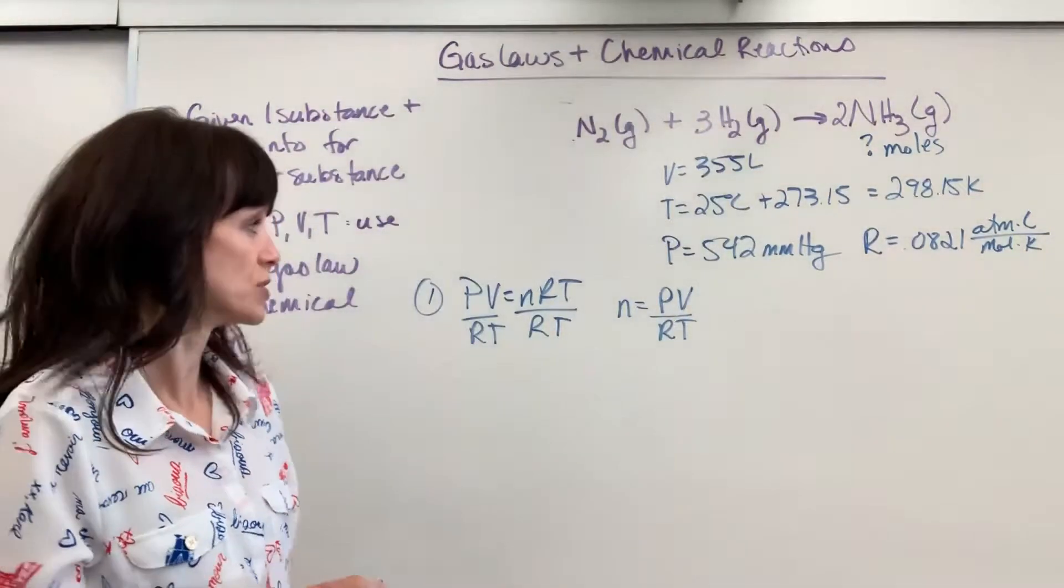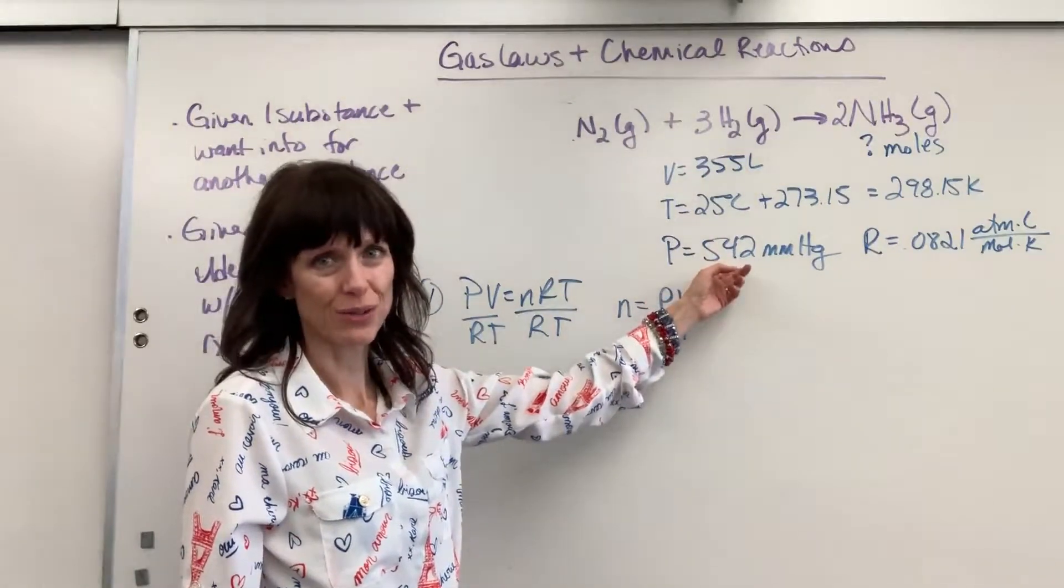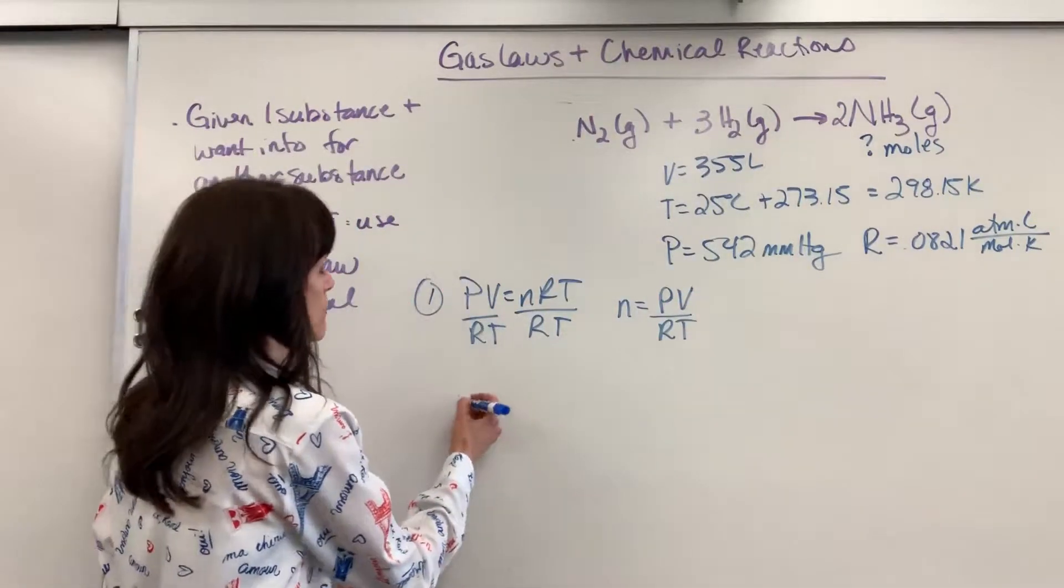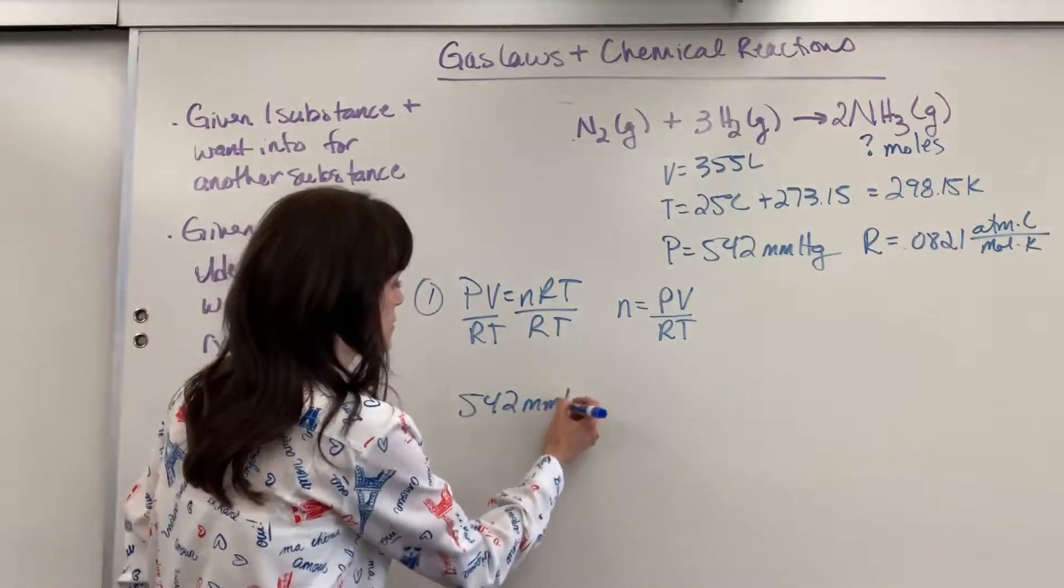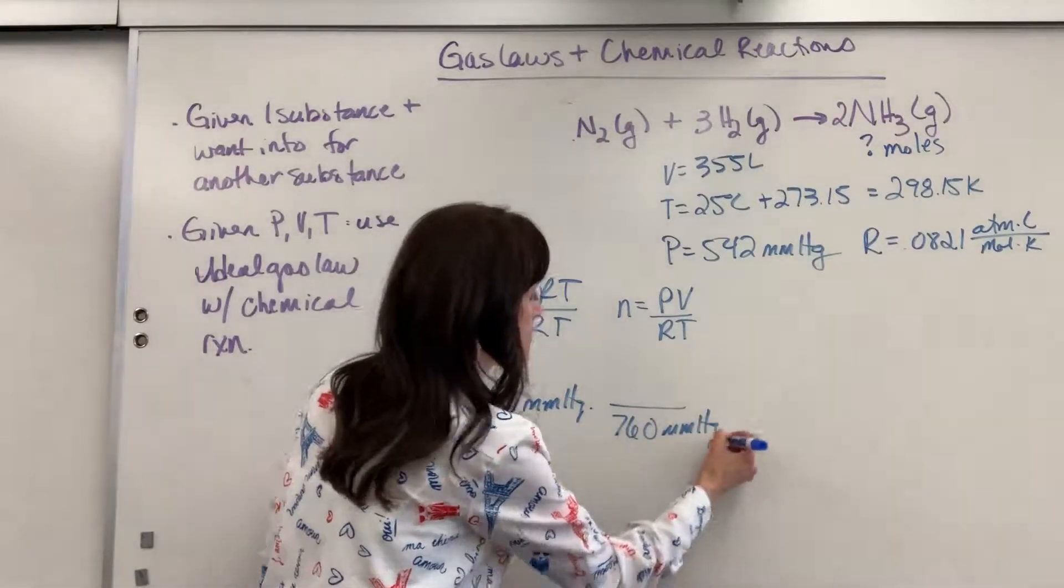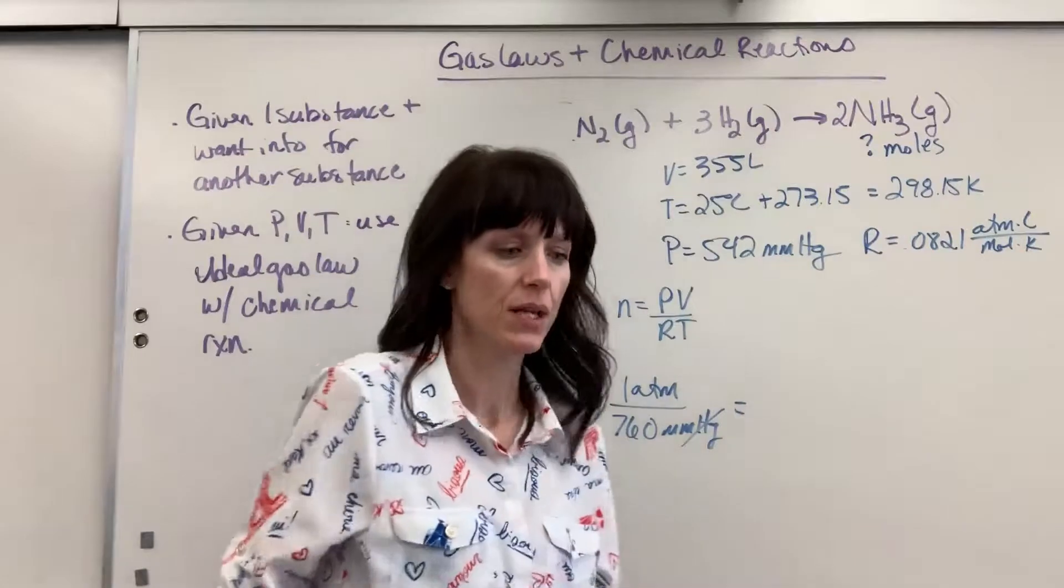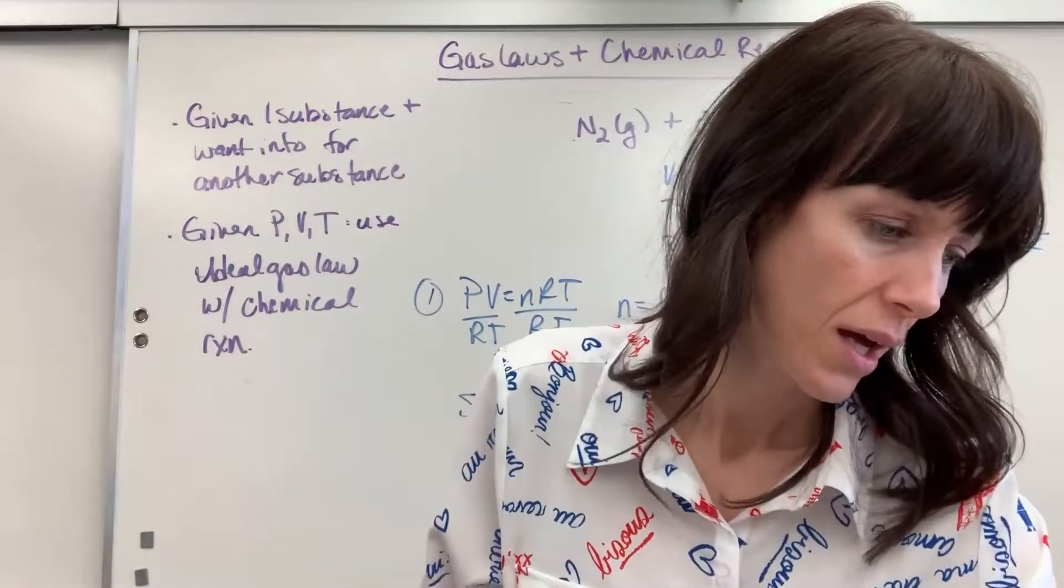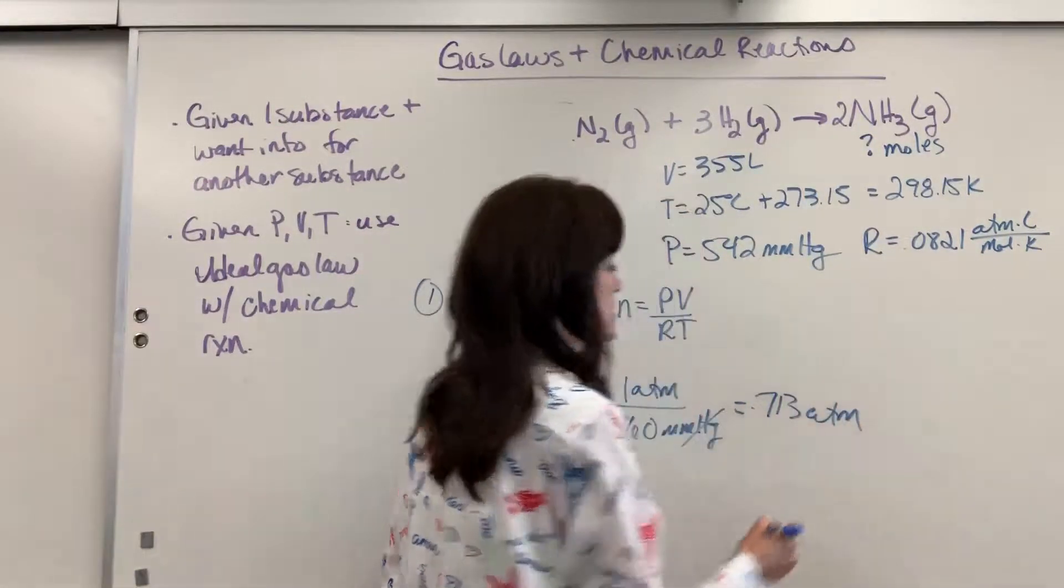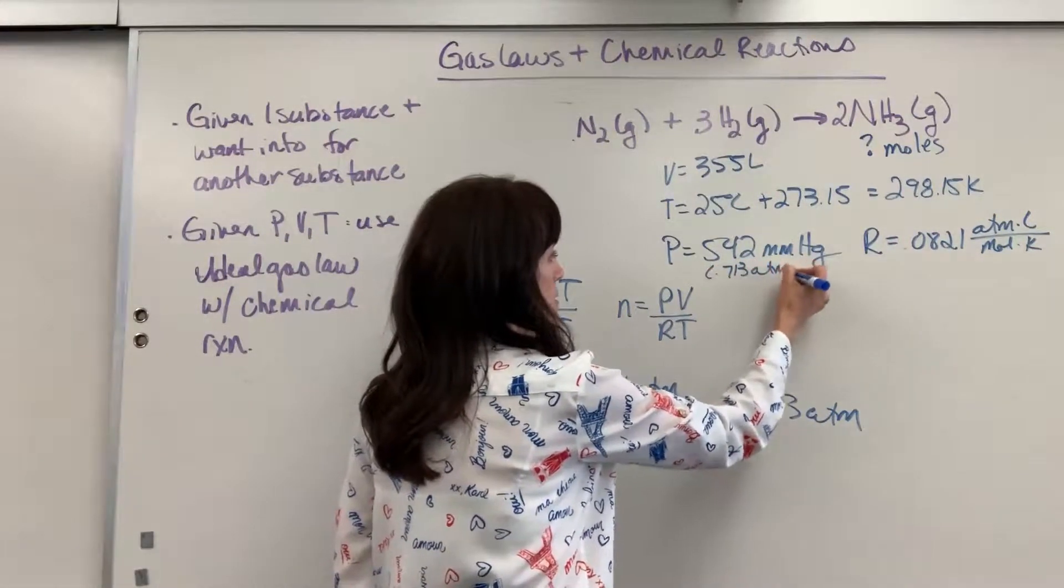At this point, it's just a plug and chug. I do have to point out one thing: I don't have pressure in the correct unit. That has to be in atm. 542 millimeters of mercury—there are 760 millimeters of mercury in one atm. The units tell me to divide. When we do that, we get 0.713 atm.